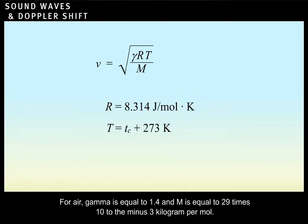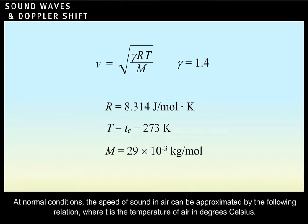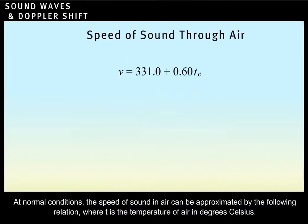For air, gamma is equal to 1.4 and M is equal to 29 times 10 to the minus 3 kilogram per mole. At normal conditions, the speed of sound in air can be approximated by the following relation, where T is the temperature of air in degrees Celsius.